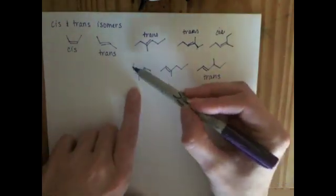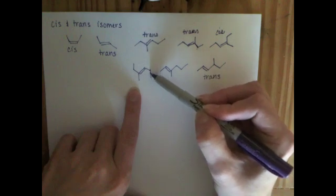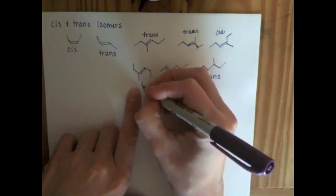Down here, we're going to look again at the longest carbon chain. It goes across the double bond. So it's a trans isomer. This longest carbon chain goes across the double bond. So it's trans.